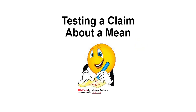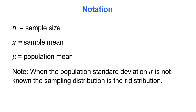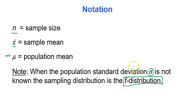Hello there. We are now going to test the claim about a mean using the concept of hypothesis testing. We have to be careful whenever we use hypothesis testing for a mean because there are two different types of distributions we would use. Note the following notation: n is sample size, x-bar is sample mean, and the Greek letter mu is the population mean. When the population standard deviation sigma is not known, we have to use the t-distribution to find the p-values and perform the hypothesis test.